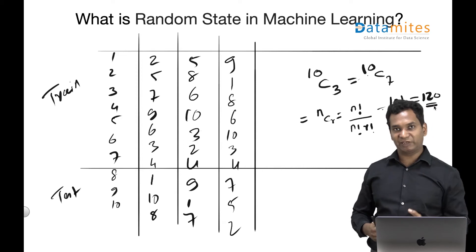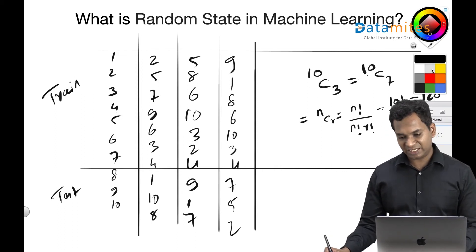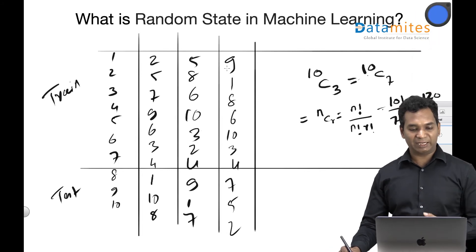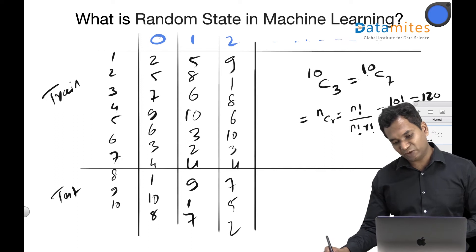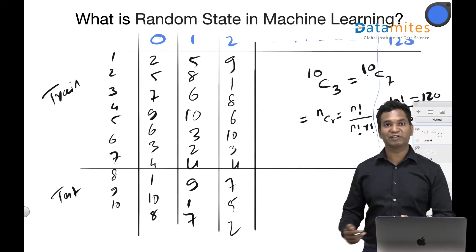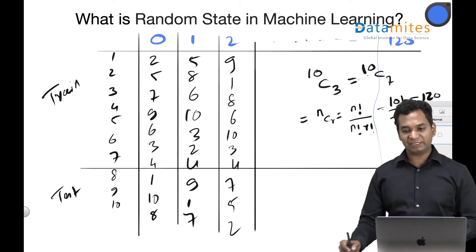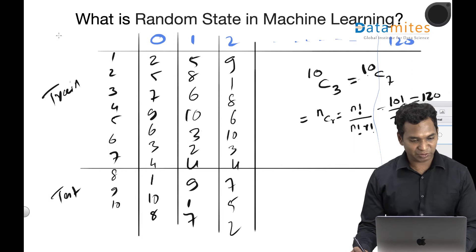Every state can be given a number. For example, this is state 0, this is 1, this is 2. Likewise, we have 120 different states. In this case, this is actually your random state.